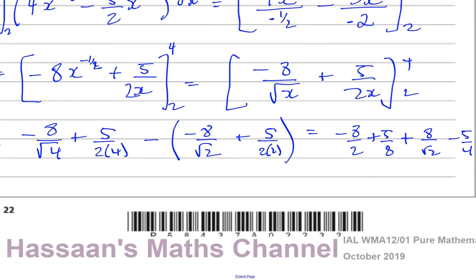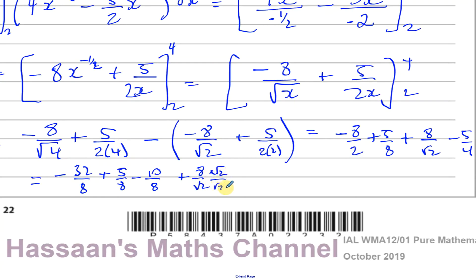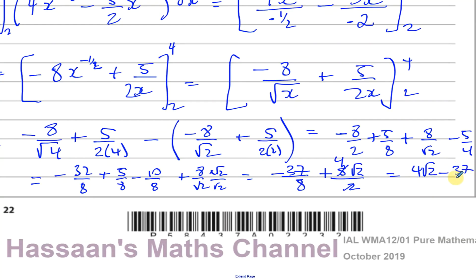Expressing everything over 8: we get minus 32 over 8 plus 5 over 8 minus 10 over 8, which simplifies to minus 37 over 8. Rationalising the remaining term, 8 over root 2 becomes 8 root 2 over 2, which equals 4 root 2. So the exact area is 4 root 2 minus 37 over 8.